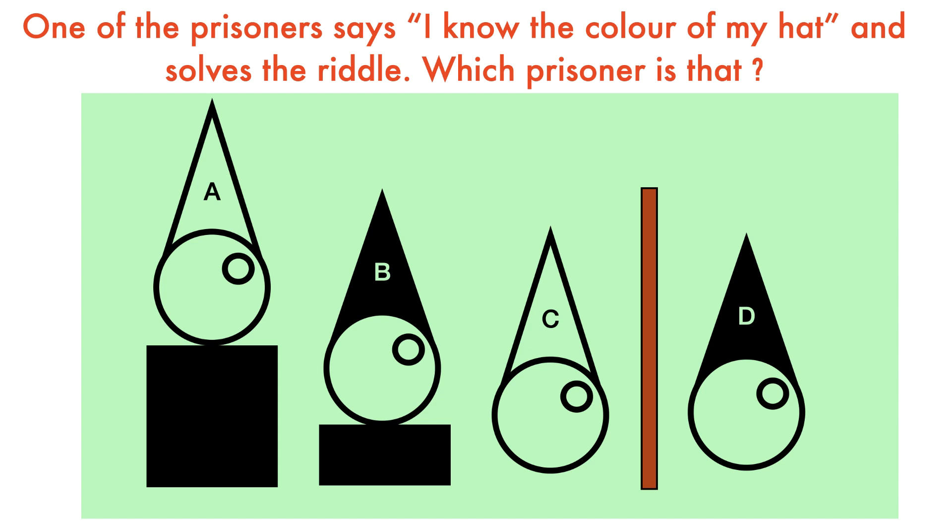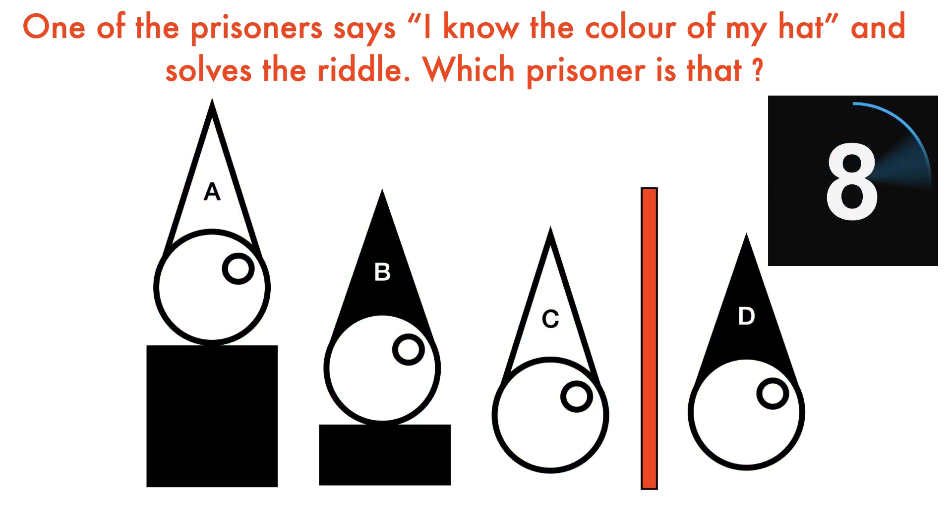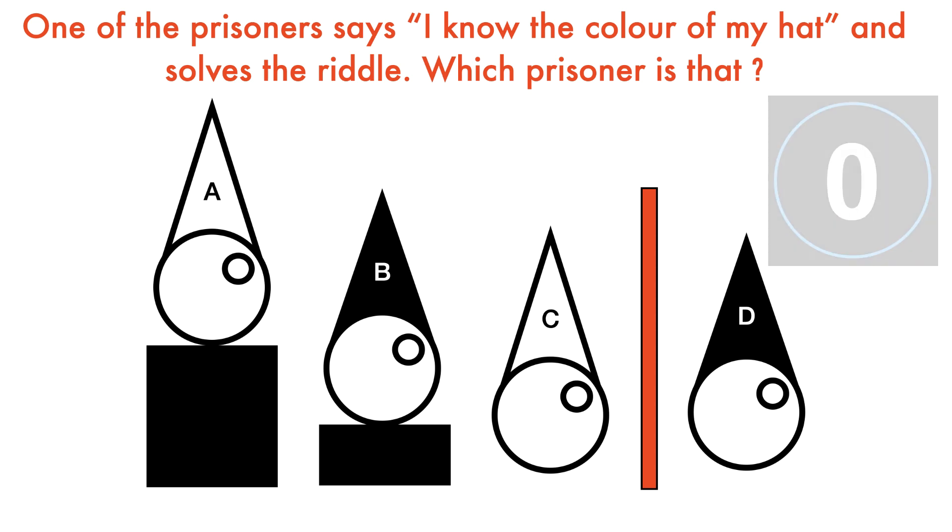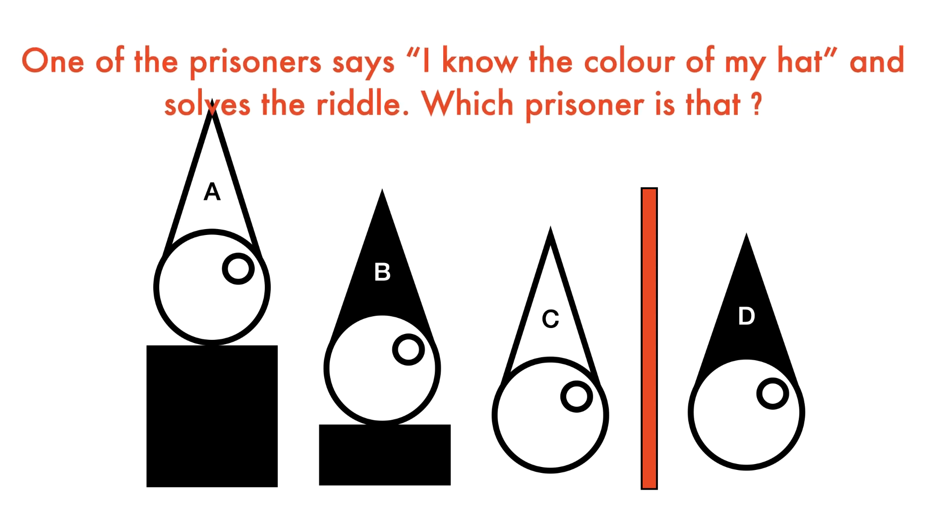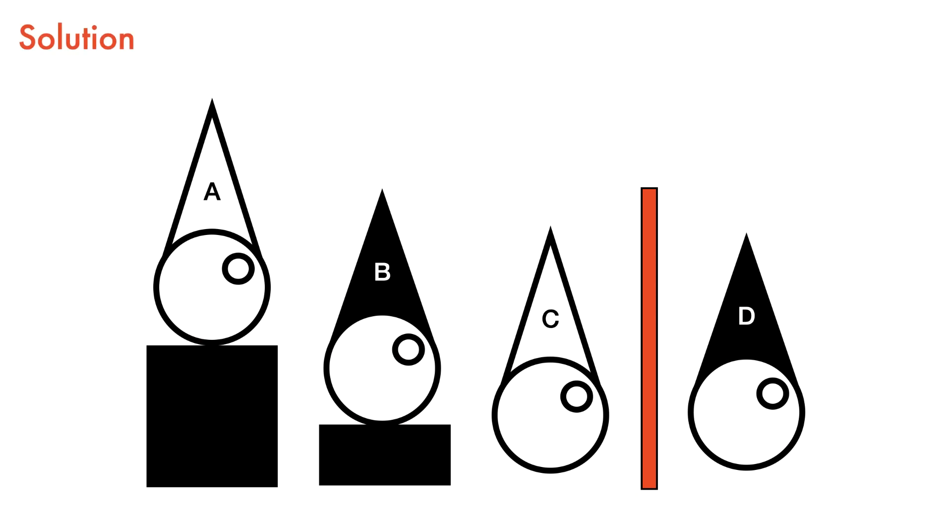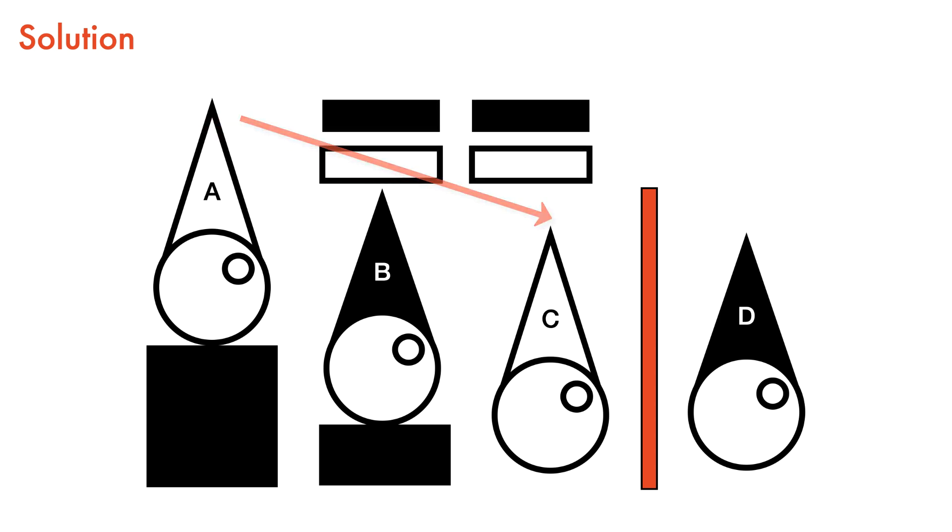Let me explain the solution now. Each one of the prisoners knows that there are four hats, two black and two white. If prisoner A observes that prisoners B and C have the same colored hats, he would assume that he has the opposite color and solve the riddle.